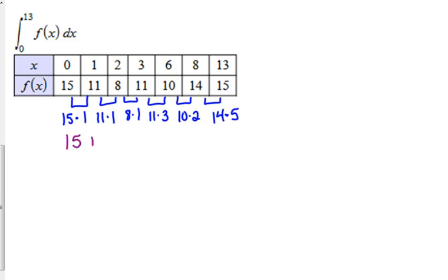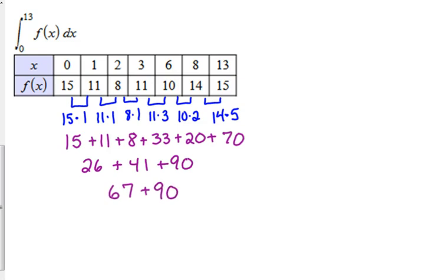So, we have 15, plus 11, plus 8, plus 33, plus 20, plus 70. So, we've got 26, plus 41, plus 90, 67, plus 90, 157. These will most likely be calculator inactive questions, just to give you the heads up there.